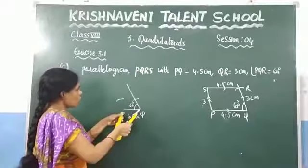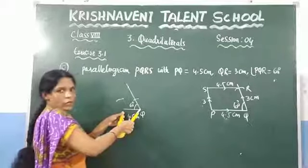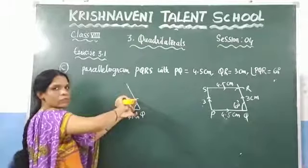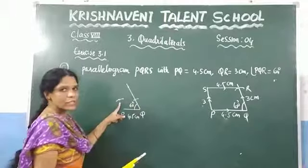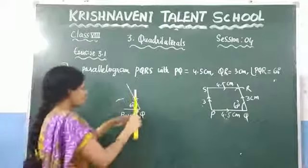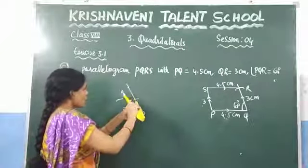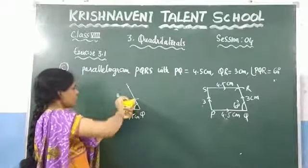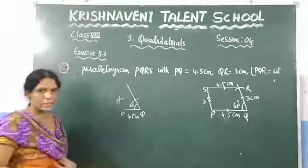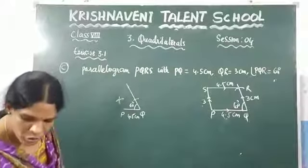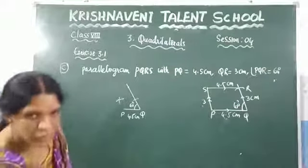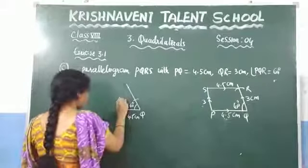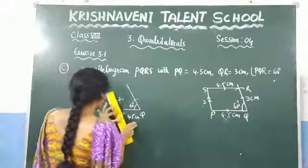This length and this length are the same. If this is 4.5, this must also be equal to 4.5. I already took this one as 4.5, so at this point, you need to make an arc of 4.5 so that you will get an intersection point. At this point, make an arc of 4.5. We got an intersection point. Now you need to join those intersection points with your scale — mark the intersection point and join this one. After that, you need to join these two points.